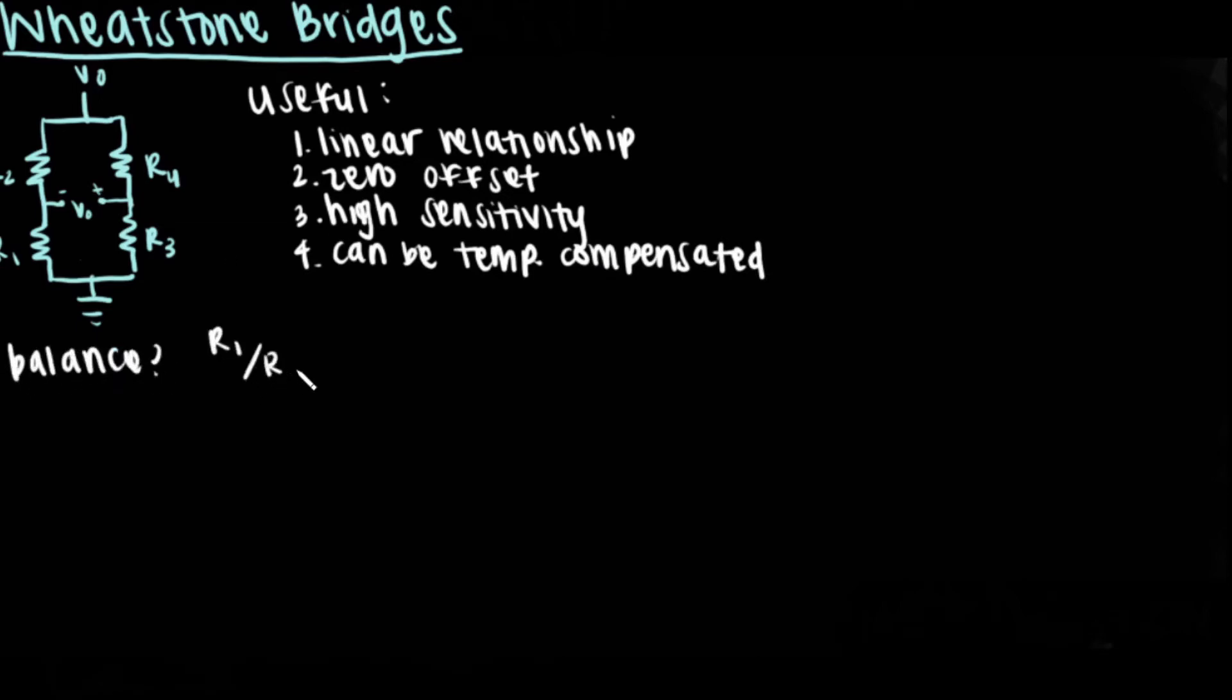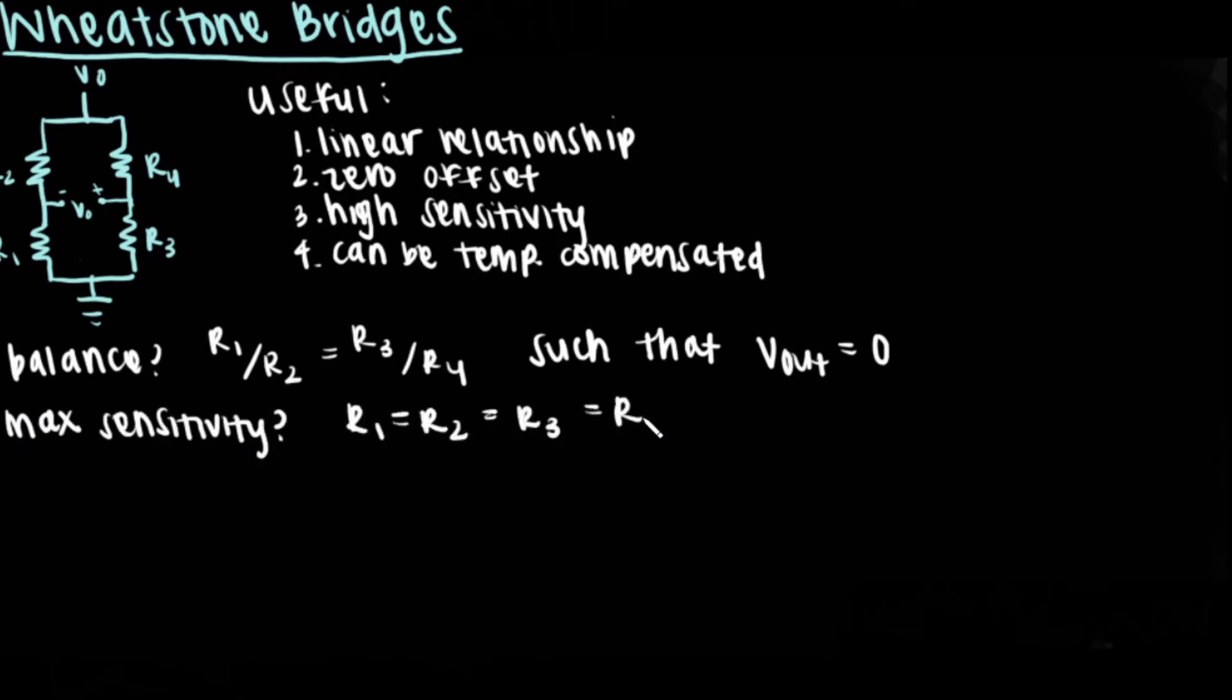In a balanced wheatstone bridge, the ratio of R1 over R2 and R3 over R4 are equal, making the output voltage zero. From the maximum sensitivity, the values of the resistors are equal. A wheatstone bridge is governed by the following relationship built by the two voltage dividers: R3 divided by the sum of R3 and R4 minus R1 divided by the sum of R1 and R2, multiplied together by the voltage source.